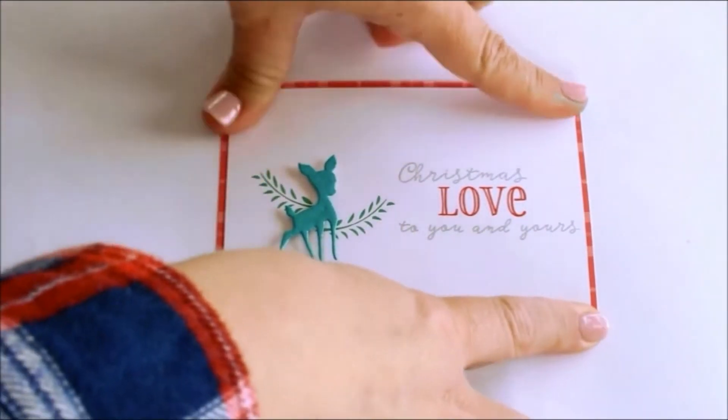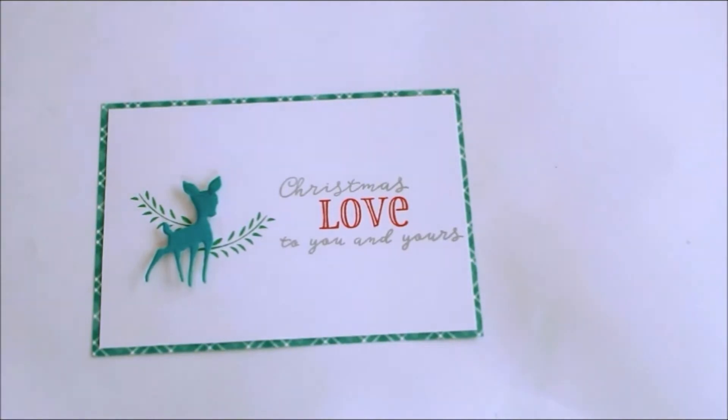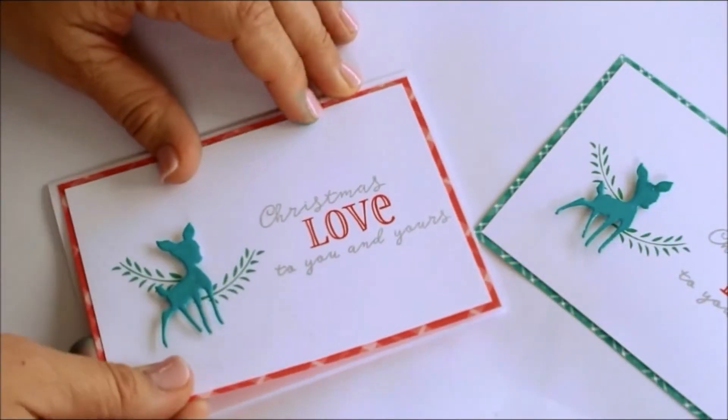Each card front gets glued to some patterned paper from the Perfectly Plaid Collection. Then onto a white card. I love that the patterned paper has horizontal plaid on one side and diagonal on the other.